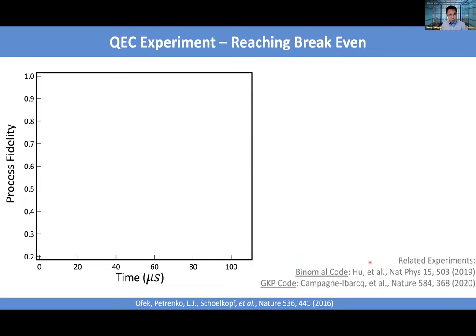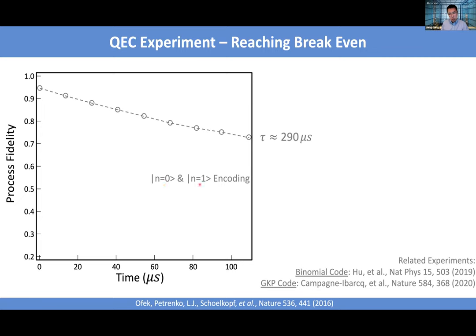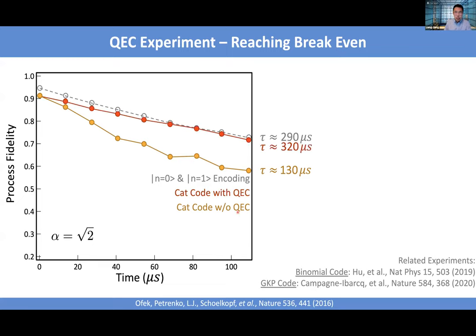Here is experimental data with horizontal axis being time and vertical axis being process fidelity. The bosonic coding really works: compared with the best encoding without error correction (minimum photon number encoding with |0⟩ and |1⟩), the cat code initially has higher loss because it uses more photons, but once error correction is restored, it does better. This demonstrates that bosonic error correction can boost performance. Similar experiments have been done with the binomial code and GKP code, and people are working to improve performance further.